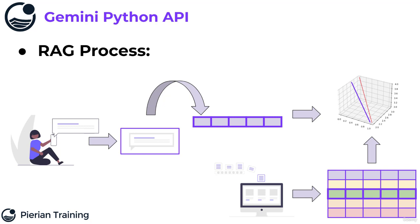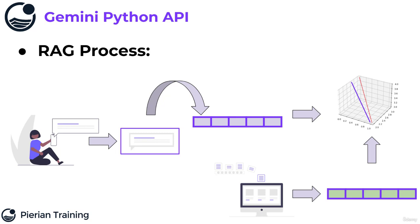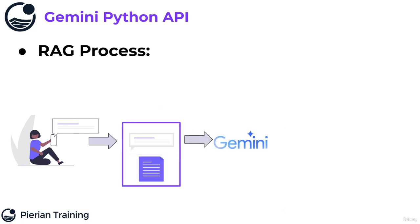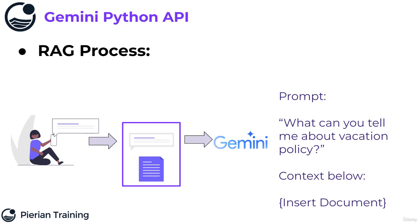This is sometimes known as semantic similarity. What I'm doing here is figuring out which document is most similar to the query that's being asked. Once I perform this cosine similarity search, I'm going to isolate that document — and really what I need is not the vector embedding representation, but the document itself. Now I have the document that has the most similar content to my original query. I'm going to pass in my original query with additional context and paste in that document, then pass it into Gemini. Maybe the prompt is: what can you tell me about vacation policy? Here's some context below — and then I insert that document.